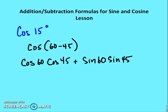Cosine of 15° is cosine of (60° − 45°) — we did this in the prior example. You could also do 45° − 30°.